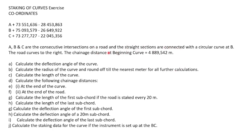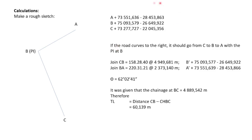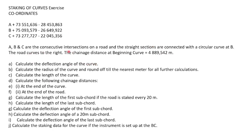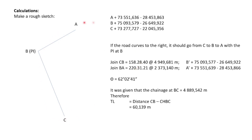These are all the steps we have to take — I'll show them through the example. We start with our coordinates, plotting them out as Y and X coordinates for A, B, and C. The road curves to the right, meaning it curves in a clockwise direction from C to B to A. Using those coordinates, we determine distances and directions. For join CB, we get a distance of 4949 meters and a direction of 159.8 degrees.